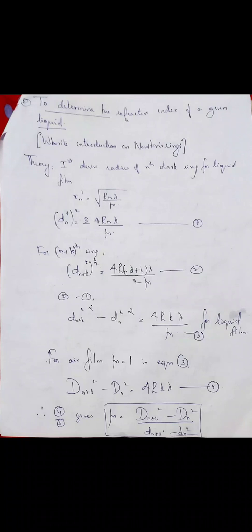Hi students. In the last class we dealt with one of the applications of Newton's rings arrangement — determining the wavelength of monochromatic light. Here we are going to learn the second application: the determination of the refractive index of a given unknown liquid using Newton's rings arrangement. This is our second essay, and we have to follow the same route as far as the examination is concerned: introduction, theory, and experimental procedure.